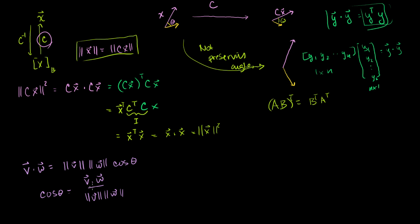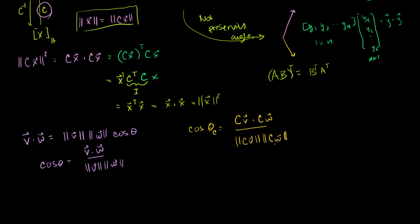Let's see what the angle is after we multiply our vectors by C. The cosine of the new angle theta_C, once we perform the transformation, is Cv dot Cw divided by the lengths of Cv times the length of Cw. We already know that lengths are preserved, so the length of Cv is just the length of v and the length of Cw is just the length of w. So the denominator becomes the length of v times the length of w.